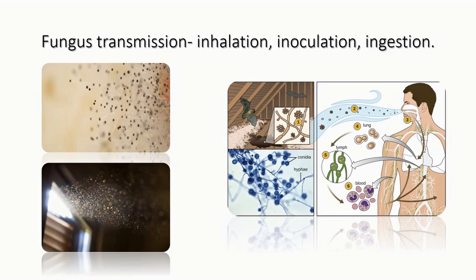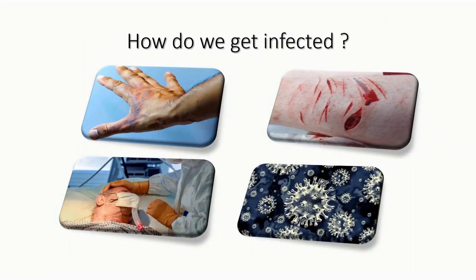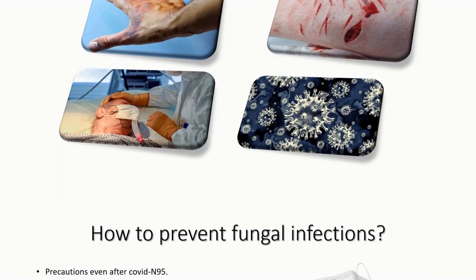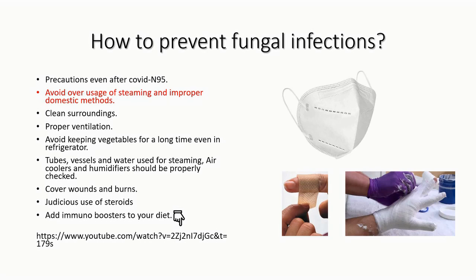Transmission occurs mainly through inhalation, inoculation, and oral ingestion, and also through burns and cuts. Now the question is how to prevent fungal infection. If you have survived COVID, congratulations, but make sure you take all precautions because your immunity is already reduced. Avoid excessive steaming — three to five minutes is more than enough, as over-steaming may even lead to nasal damage. Keep clean surroundings, ensure proper ventilation, avoid keeping rotten vegetables, and cover all wounds and burns. You can also use a lot of immune boosters.